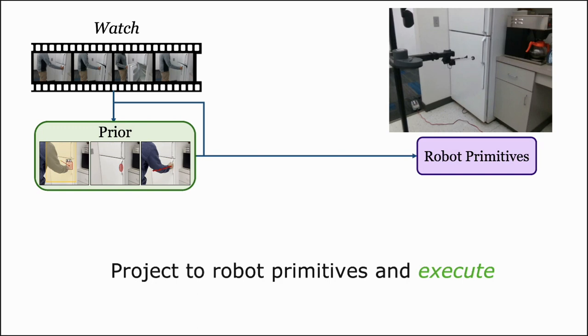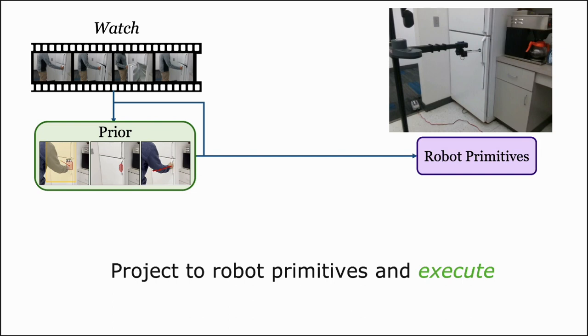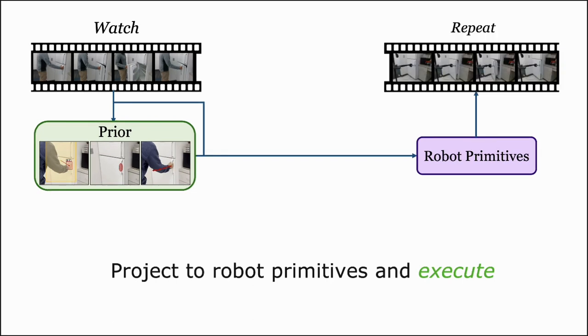The robot then executes these primitives in the real world. As you can see here, the robot is close, but it fails. Therefore, it needs practice in the real world. This is the repeat stage of our method.